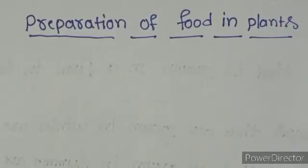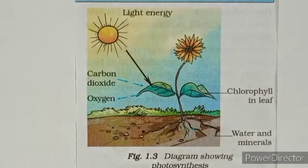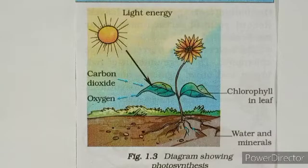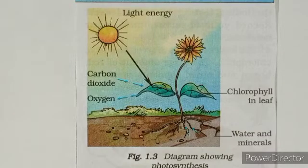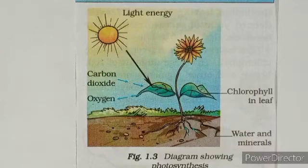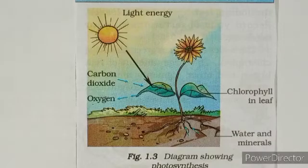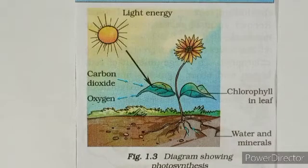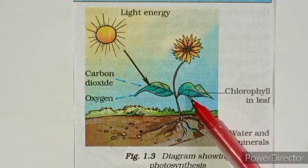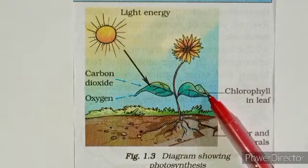Now we are going to learn about the preparation of food in plants. Food is essential for us to live, and most of the food we eat comes from plants. Green plants make their own food, so they are called producers. It is the leaves that make food for the plant. Leaves are green in color due to the presence of a natural green substance called chlorophyll, which helps plants make their food.